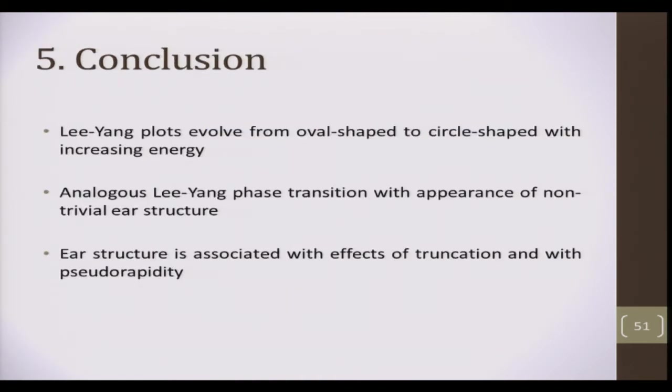In conclusion, we can say that the Lee-Yang plots evolved from an oval shape-like plot to a subtle shape with increasing energy. There seems to be some sort of analogous Lee-Yang phase transition with the appearance of a non-trivial ear structure in the convergence of zeros towards the positive real axis. The ear structure is associated with increasing energy, effects of truncation, and with pseudo-rapidity cut.